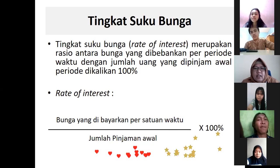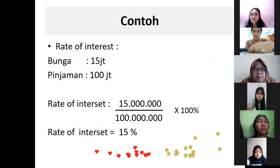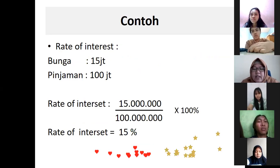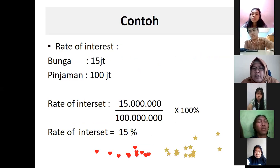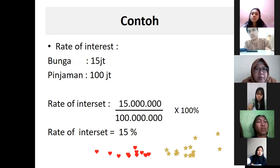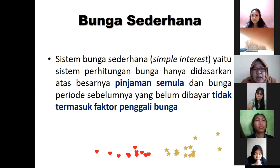Jadi bunganya itu gampang ya. Hutangnya berapa di bank dicatat, dikurang dengan uang sebelumnya dipinjam, dikurangkan 15 juta, itulah bunganya. Ada rumus tingkat suku bunga: tinggal bunga yang dibayarkan per satuan waktu, dibagi dengan jumlah pinjaman awal, dikali 100 persen. Kayak bunganya tadi 15 juta, dia pinjam 100 juta, dikali 100 persen, jadi rate of interest-nya 15 persen. Nanti di tabel bunga ada kalian tengok, ada 1 persen, 2 persen. Itulah dia rate of interest. Nanti kalian selalu pegang tabel bunga kalau udah belajar evaluasi investasi. Ini masih perkenalannya aja.